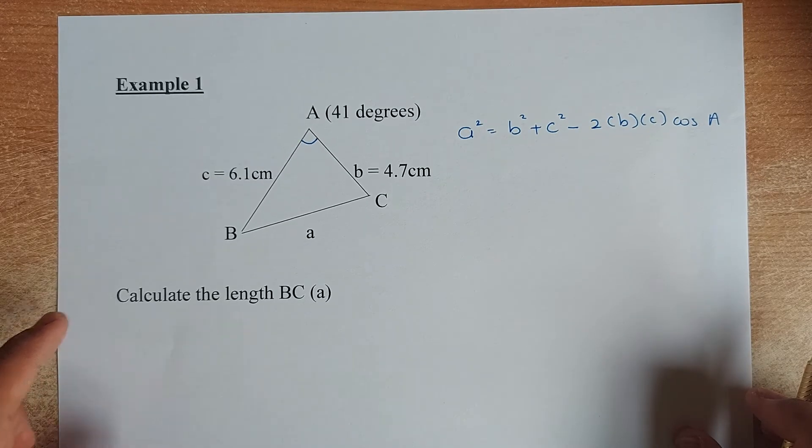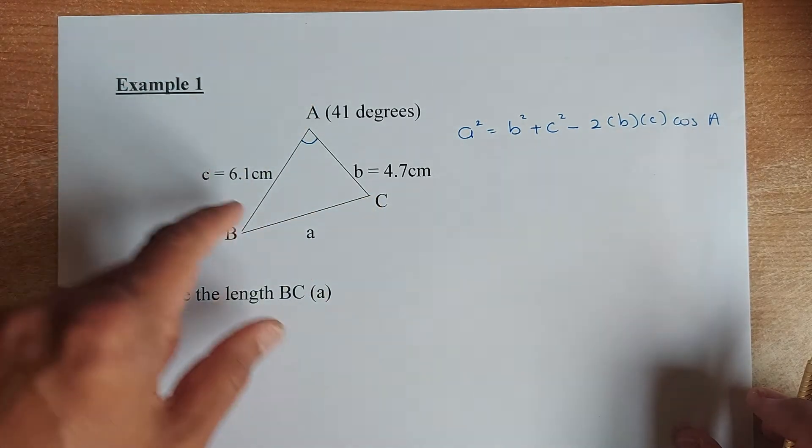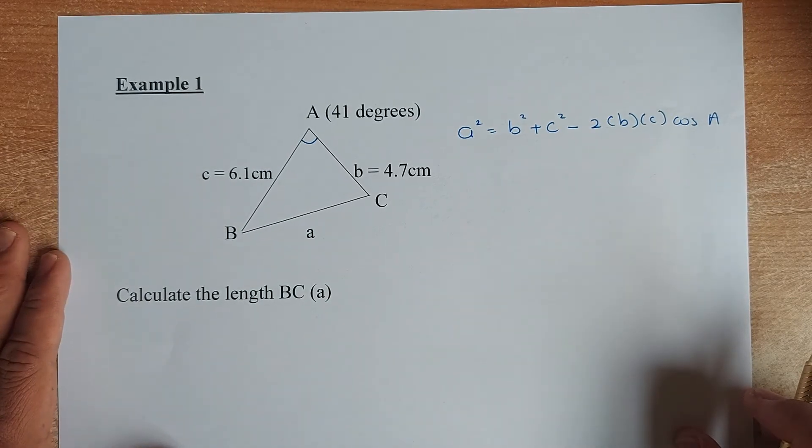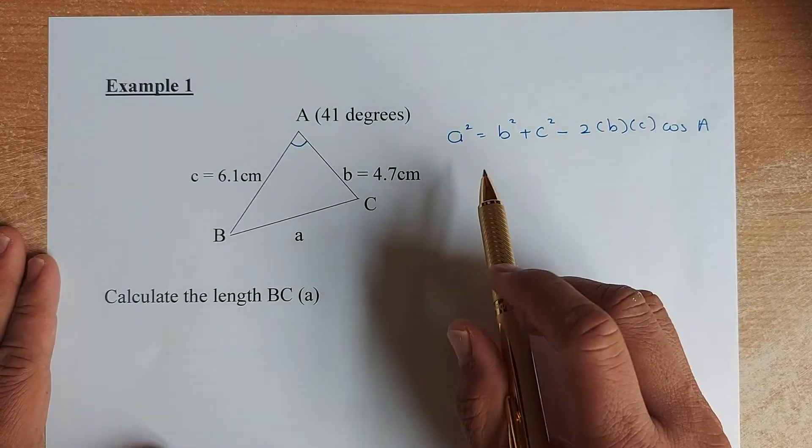The rule 2 is that you must have two sides and the included angle. So in this case, it happens again. So we can use the cosine rule.